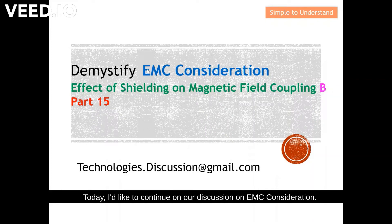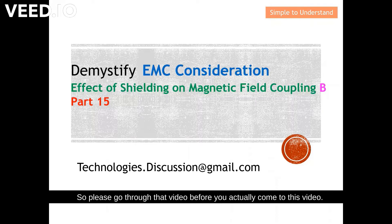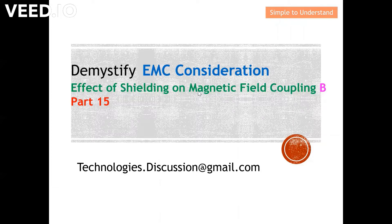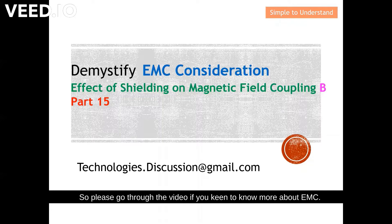Today I'd like to continue our discussion on EMC considerations. Today's discussion series will be the B series. The earlier A series video link is under the description, so please go through that video before coming to this one. In this A and B series, we are going to discuss the effect of shielding against magnetic field coupling. This will be the Part 15 series discussion on EMC.